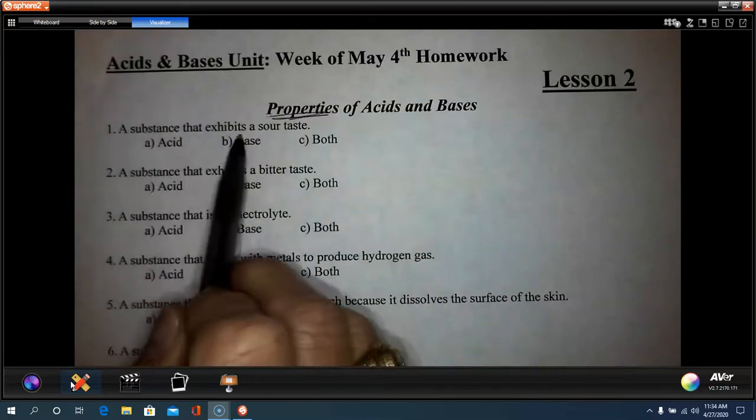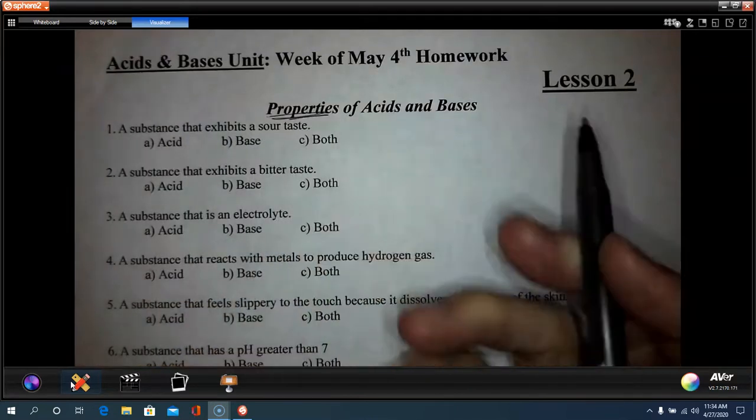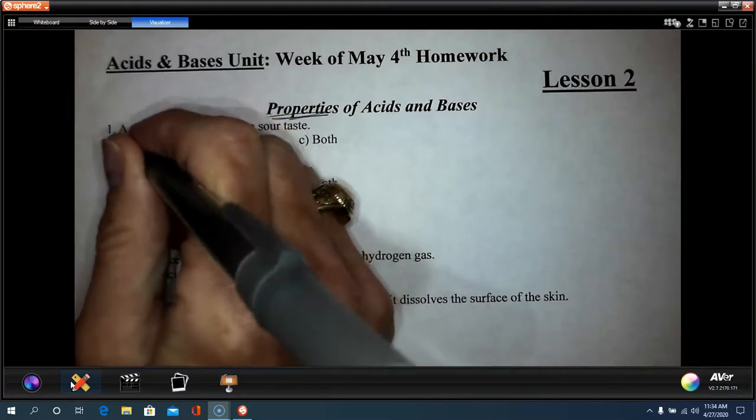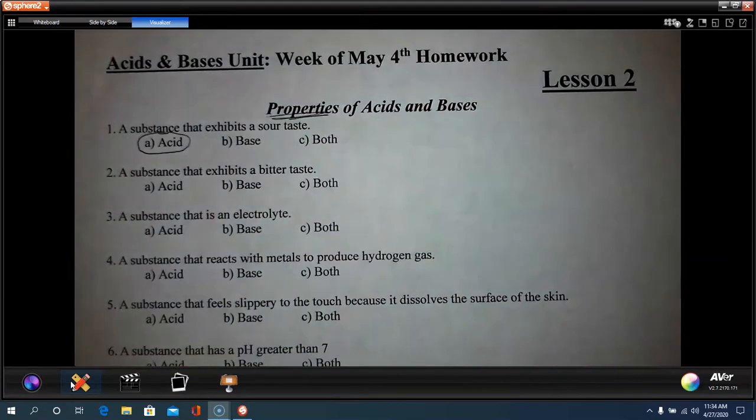Number one, a substance that exhibits a sour taste. Things like sour candy, oranges, lemons, those are acids. Those have acid in them. That's what makes them sour.